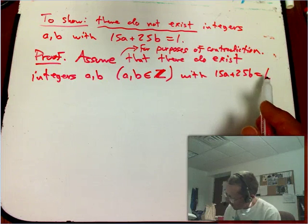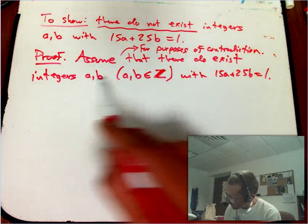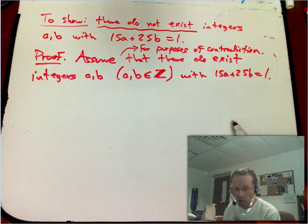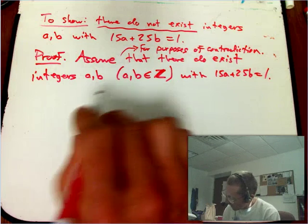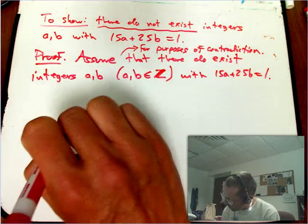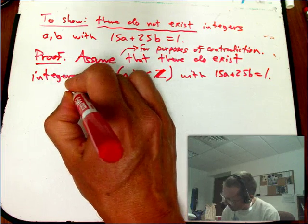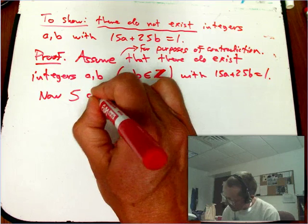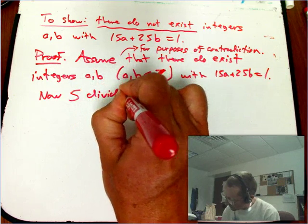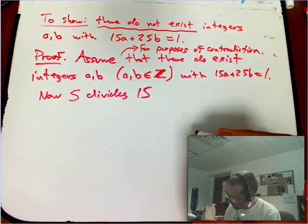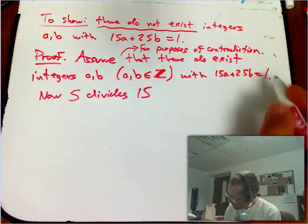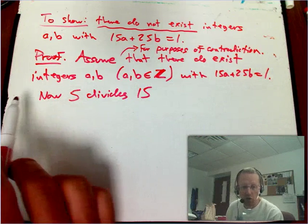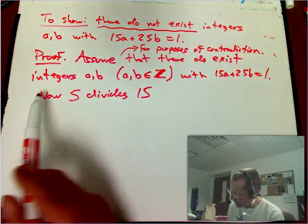So now we're assuming that there are integers a and b that satisfy this, and we want to be led to a contradiction. What can we notice here? A key observation is that 5 divides 15. I put 'now' here because I wanted to start a new sentence — really almost a new paragraph.